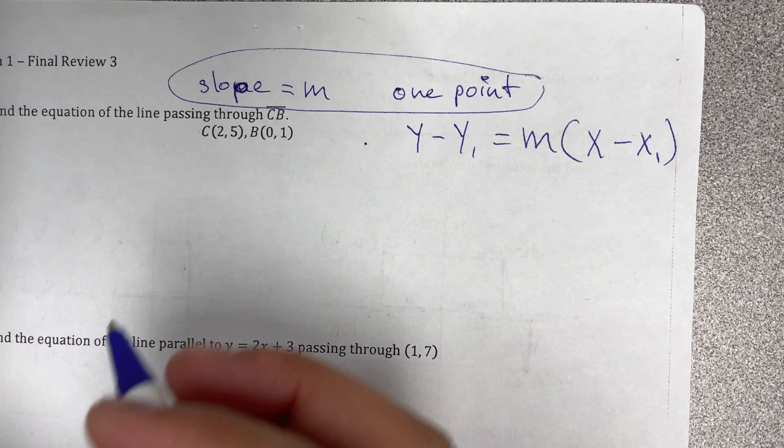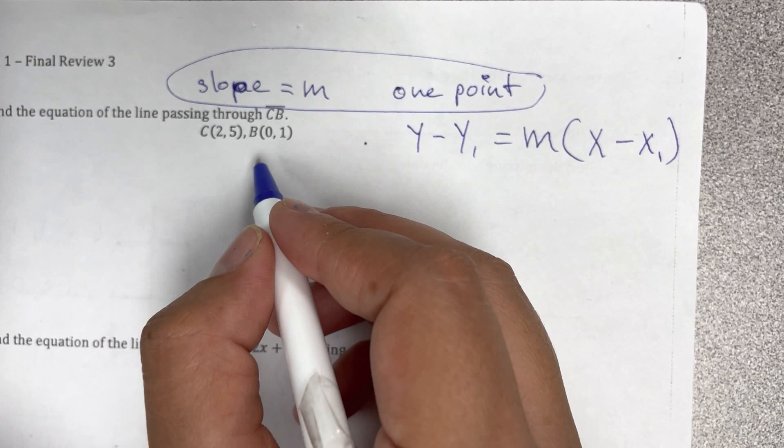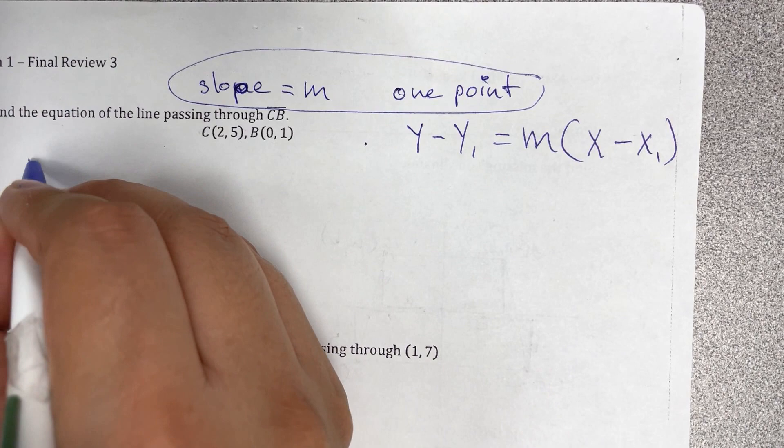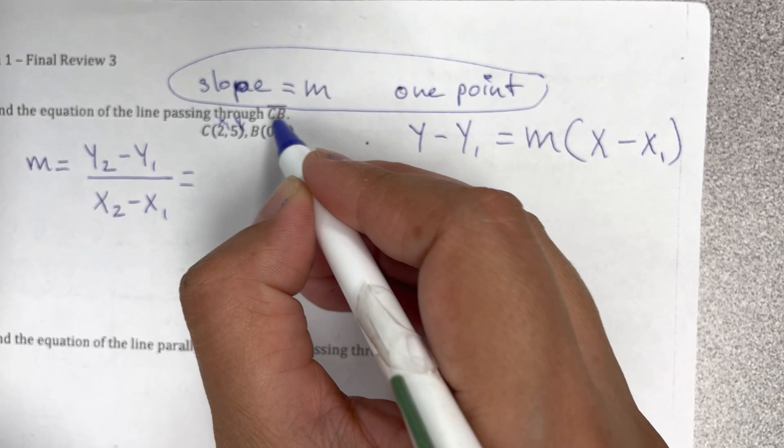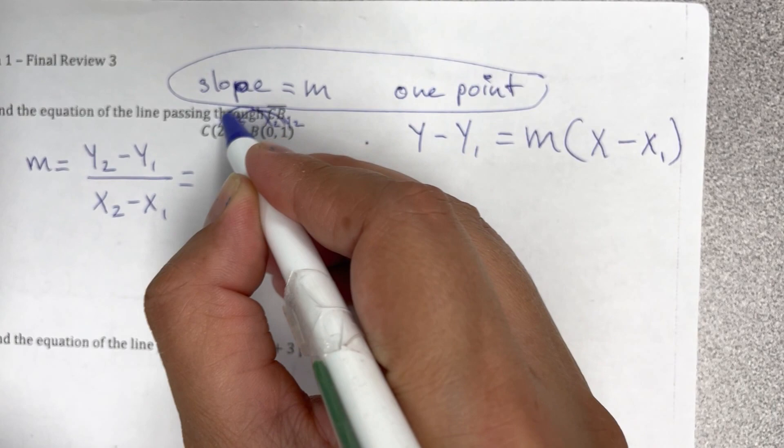So vamos a ver aquí. Do we have the slope in here? No, we have two points pero ya aprendimos en la número 4 que we can find the slope by using y2 minus y1 over x2 minus x1. Aquí este es x1 y1 x2 y2 y hacemos nuevamente el salto del delfín.